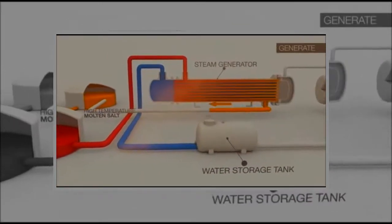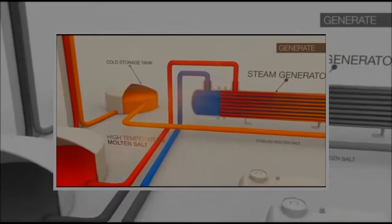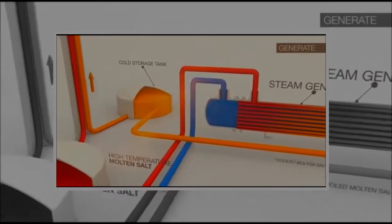Once the hot salt is used to create steam, the cool molten salt is then piped back into the cold salt storage tank where it will then flow back up the receiver to be reheated as the process continues.